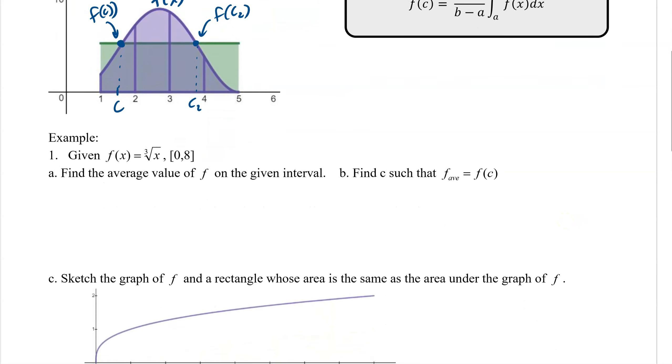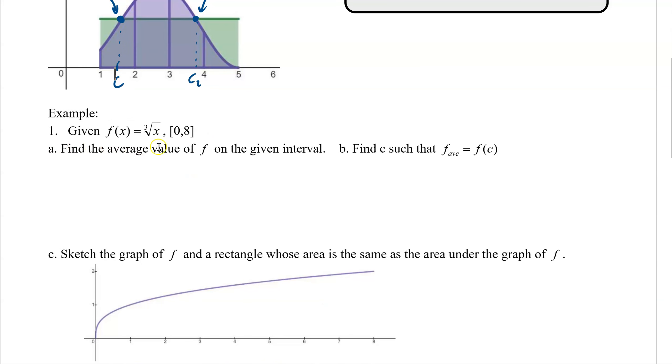Let's try one to get an idea of what's going on. First, we're going to find the average value of f on the given interval. We go 1 over 8 take away 0, integral from 0 to 8 of the cube root of x dx, and then we plug that into our calculator. That gives us 1.5.